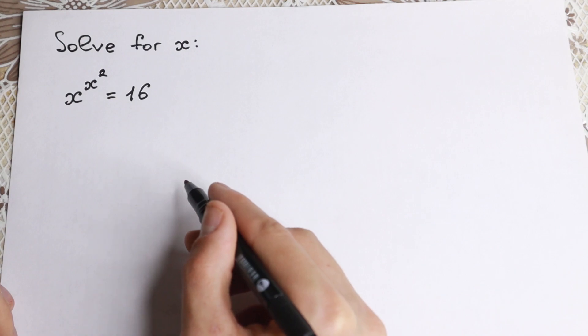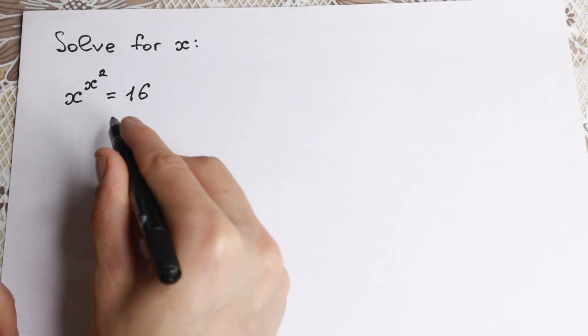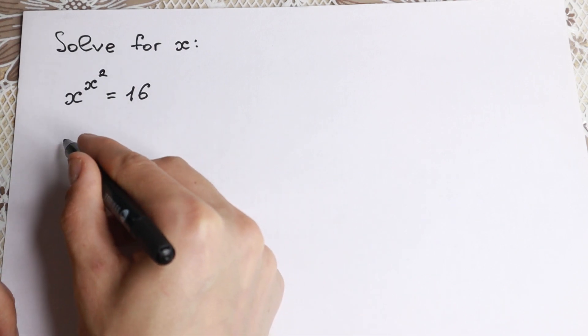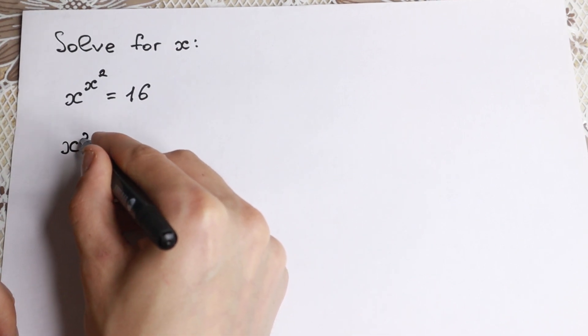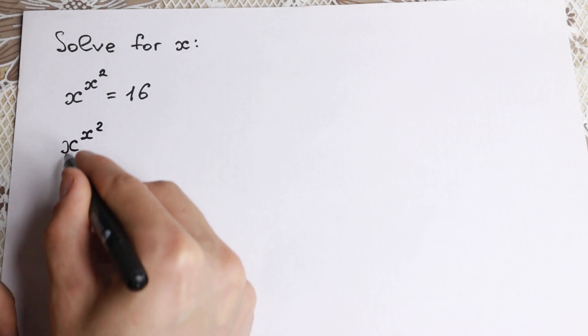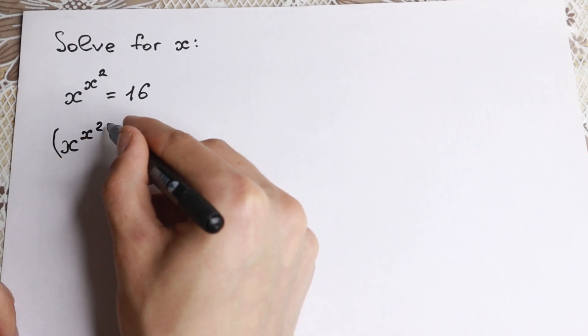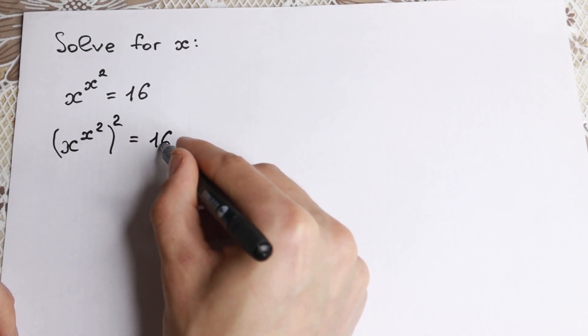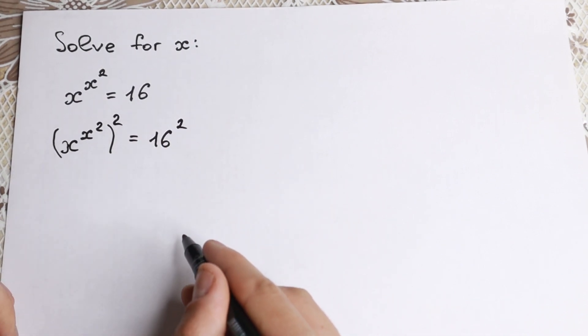I want to show you a really good trick. Take a look closely, we raise both sides to the second power, so we squared both sides. We have x to the power x squared on the left, and we raise this all to the second power. And we do the same thing with the right hand side, so we squared both sides.